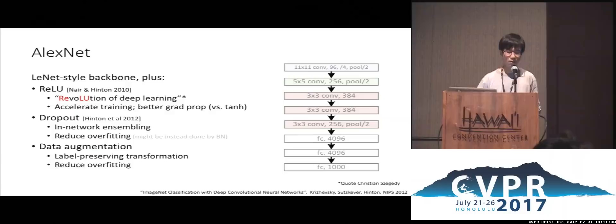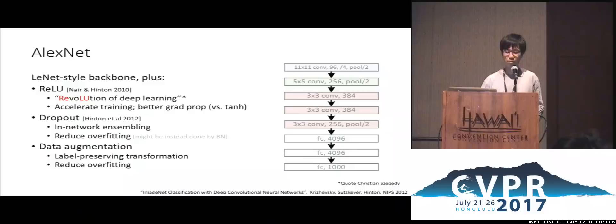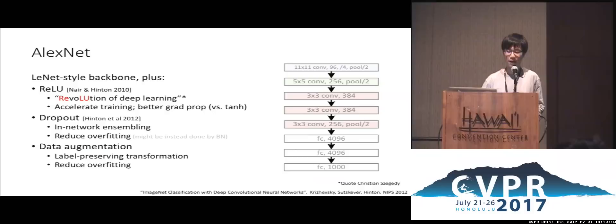In 2012, the famous AlexNet crashed into the ImageNet Classification Challenge. It is still a LeNet-style backbone but with key improvements. The first improvement is ReLU (Rectified Linear Units), which accelerates training because of better gradient propagation compared to activations like tanh or sigmoid. Another key component is dropout, which is essentially in-network sampling. For AlexNet and VGGNet with very large fully connected layers, dropout helps reduce overfitting, though it can be replaced by batch norm in later networks.